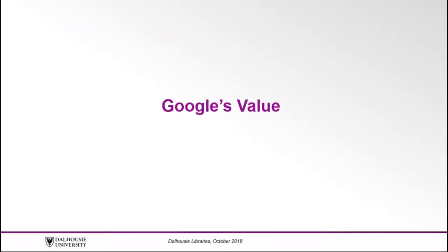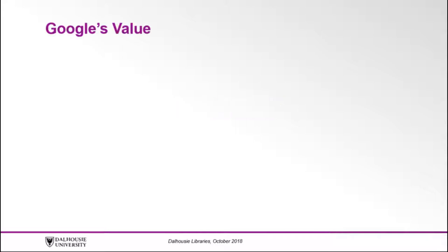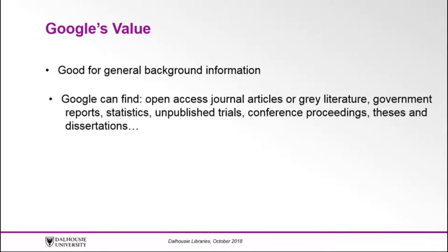Google's value. Google is great for finding quick facts or videos, but it is also useful for academic research. You can use Google as a starting point for your project to find general background information on a topic before refining your research question. You can also use Google to search for open access journal articles or grey literature, such as government reports, statistics, unpublished trials, conference proceedings, theses and dissertations, and more.